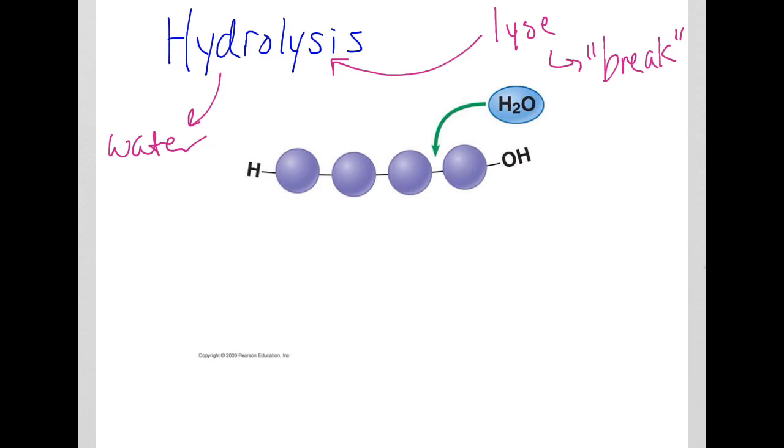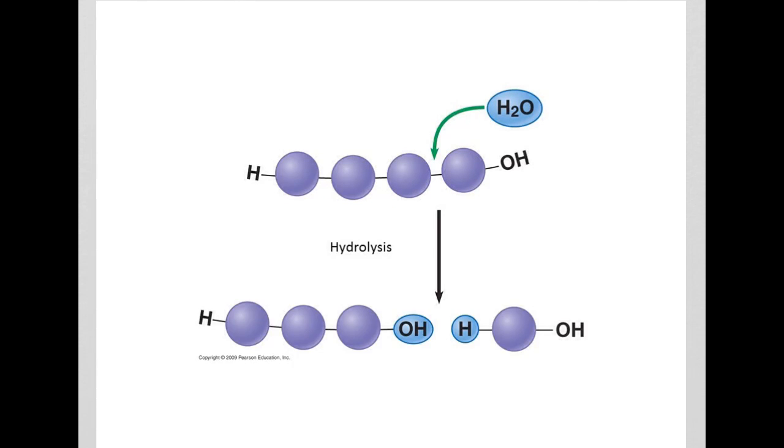So here, instead of bringing two things together by losing water, we are going to use water to actually break a molecule into smaller items. So here we're going from a polymer to subunits. So here we have our polymer, and herein comes a water molecule. And that water molecule will ultimately split the two atoms into its two subunits. And notice that the H2O becomes the OH on one molecule and the H on the other molecule. So we broke using water.